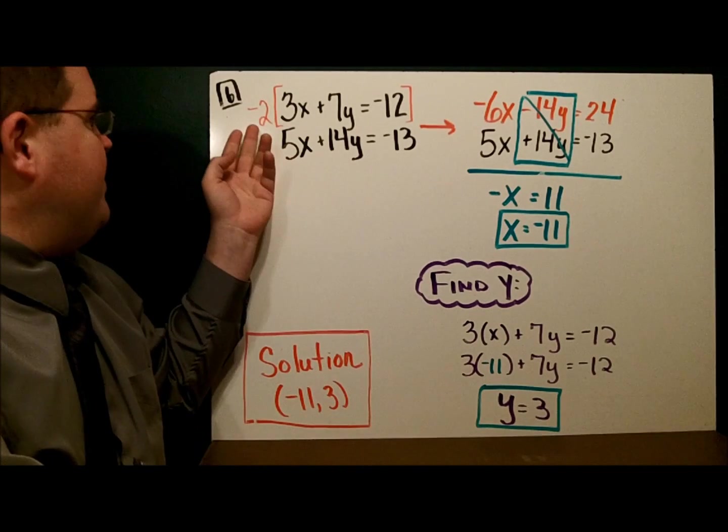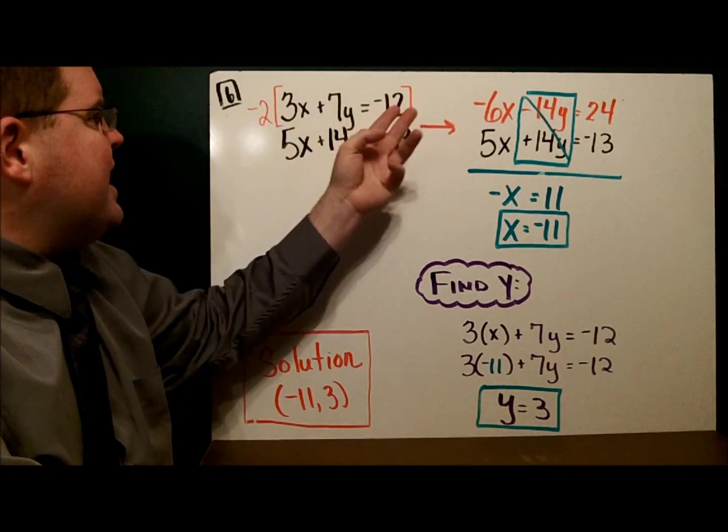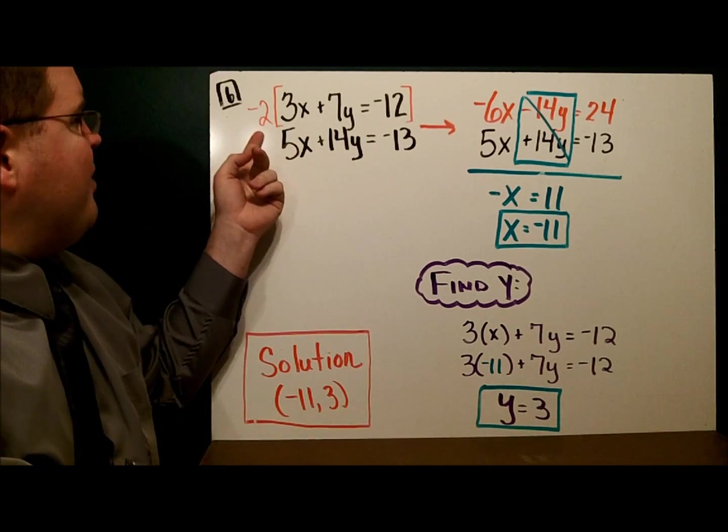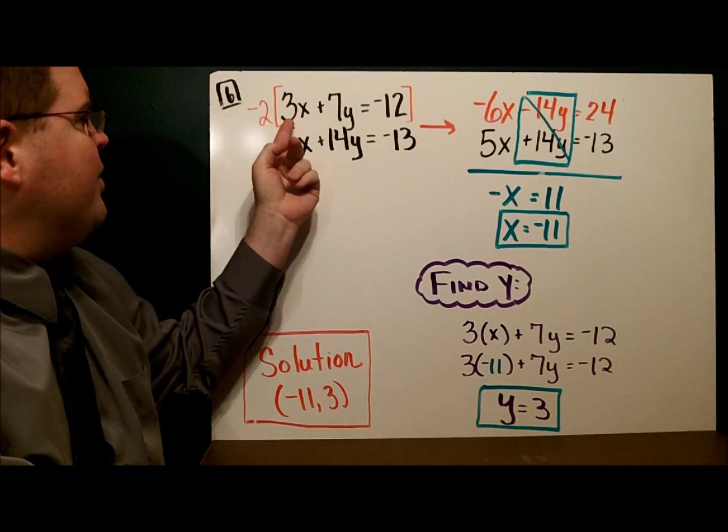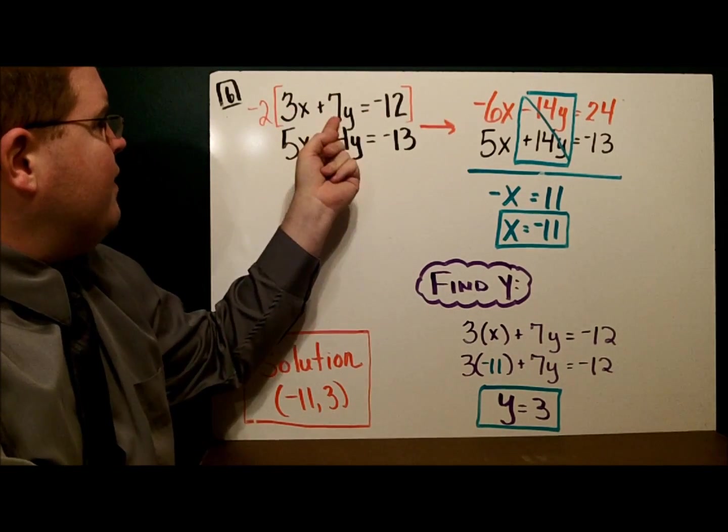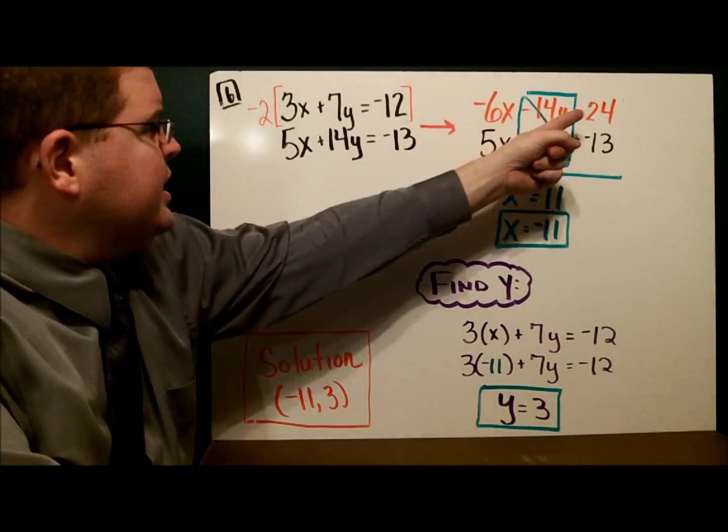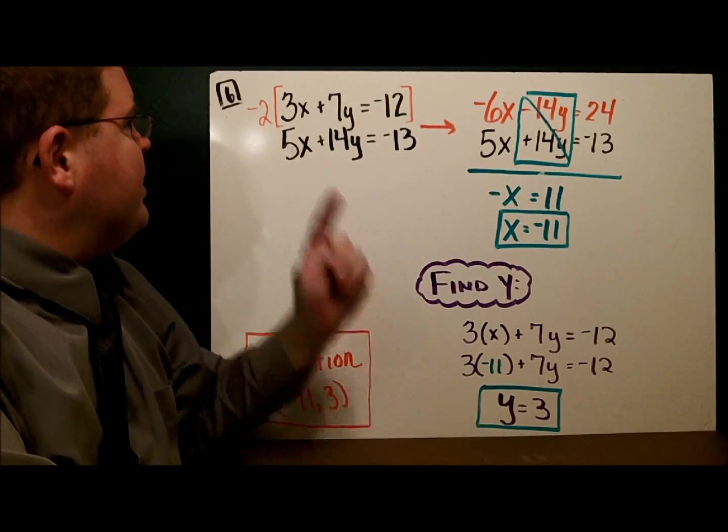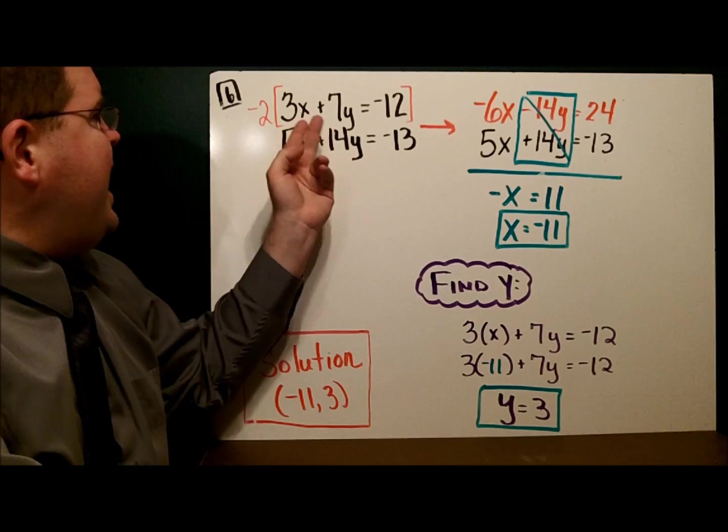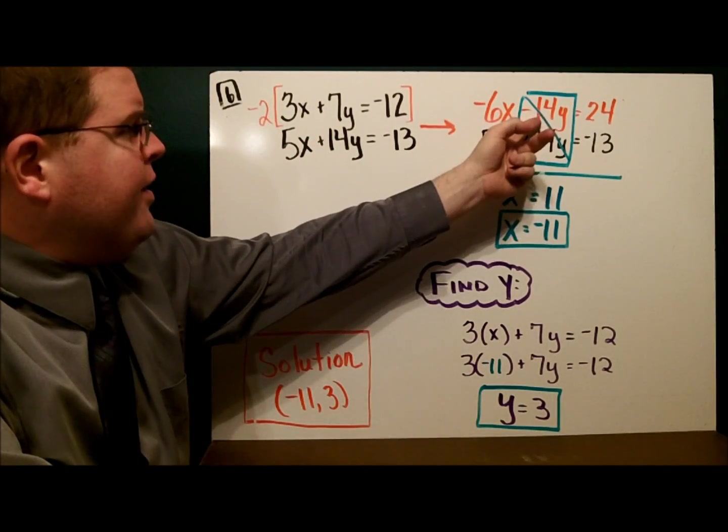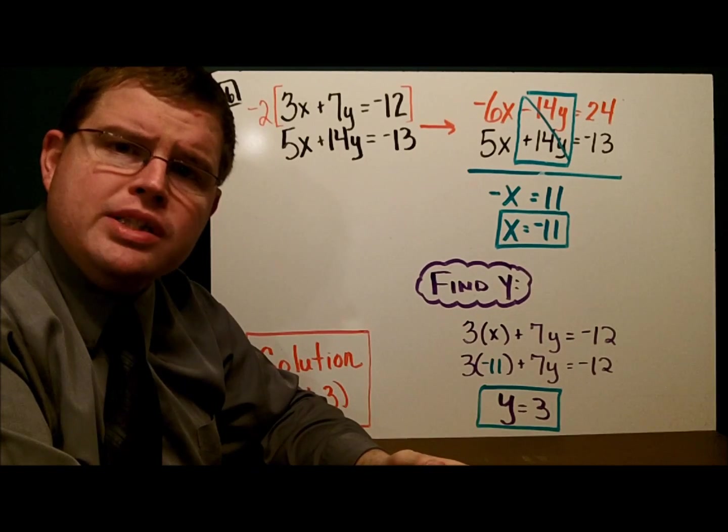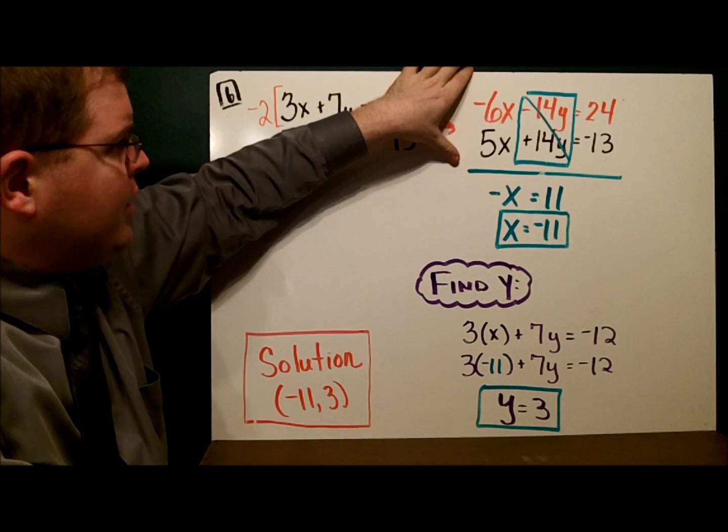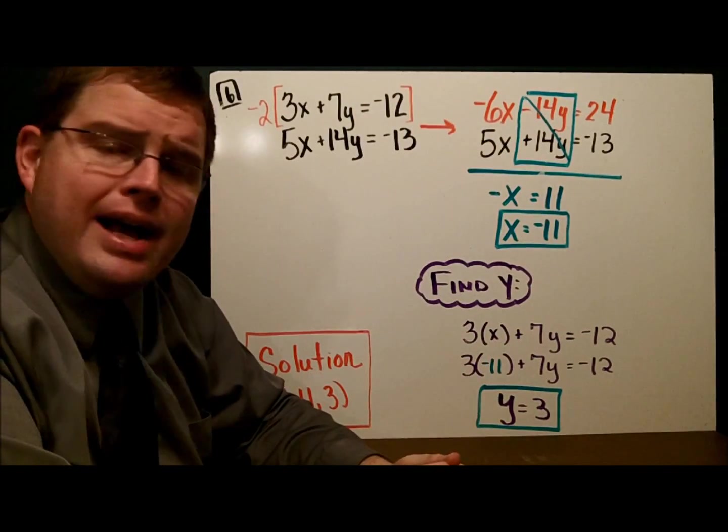Here I have a positive 7 and a positive 14. But I can do this. I can multiply both sides of the equation by the same number. That's the multiplication property of equality. So, if I multiply both sides up here by negative 2, that gives me negative 6x minus 14y equals positive 24 because we have a negative times a negative. Now, we have an opposite variable, negative 14 and positive 14.